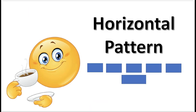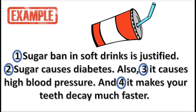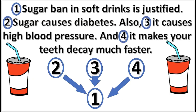Next is the horizontal pattern. The horizontal pattern is when two or more premises independently imply a conclusion. Here is an example. The diagram asserts that statements 2, 3, and 4 independently support statement 1.